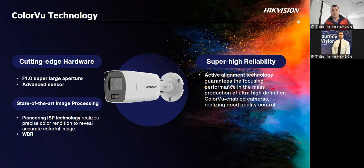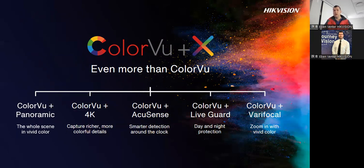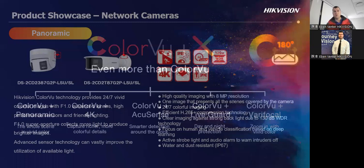Moving along — as we introduced last week, we have our ColorView with Panoramic View. We have it in 4K, that's our 8 megapixel range. Decent quality, built in with AccuSense as well. We have it in our Live Guard for security purposes, and our Varifocal for those who need to zoom in and zoom out. Starting with Panoramic — you get a very wide, 180-degree angle. It's two cameras built into one system, available in bullet and dome form.